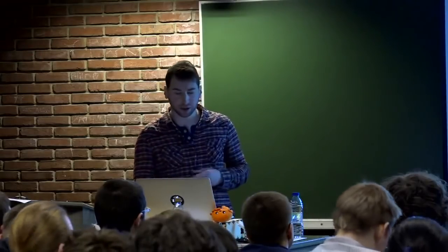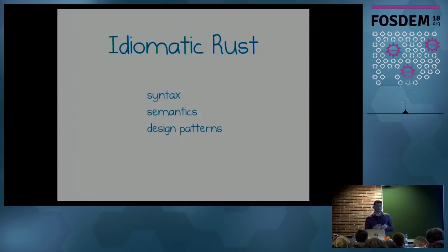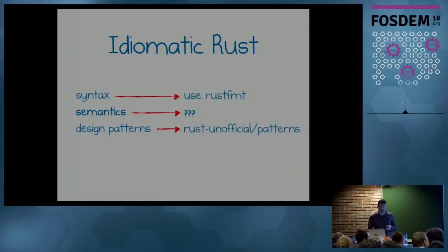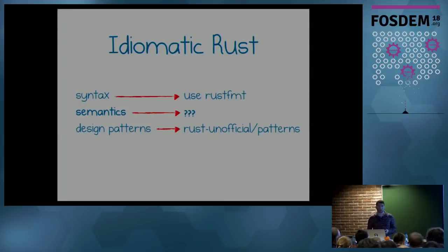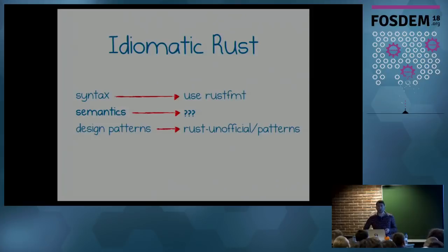What is really good code? What is solid, ergonomic, natural code? You can focus on many things, but most people would focus around these areas: syntax, semantics, and design patterns. Since this is a short talk, I'm not going to cover syntax or design patterns. For syntax, just use a standard — use rustfmt, it's quite nice. For design patterns, there's a project from core member Nick Cameron: Rust Unofficial Patterns — do check that out.